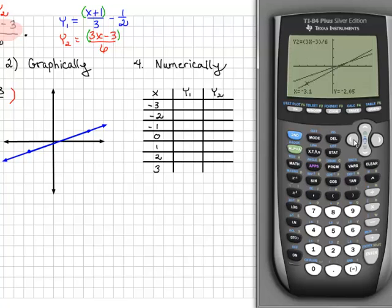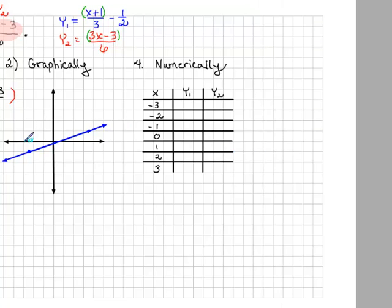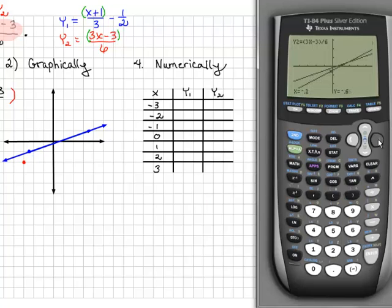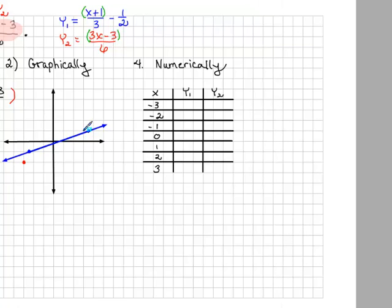Next, we want to graph y2, so use your up arrow key to move to y2. We have the point negative 3, negative 2 and the point 3, 1. Draw a line that passes through those two points. Our blue line is y1 and the red line is y2. The point of intersection is where we're going to look for our solution — it's what the two lines have in common.